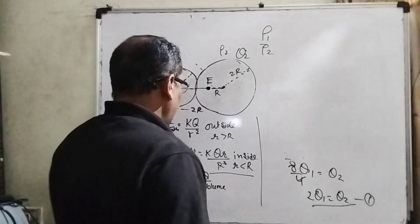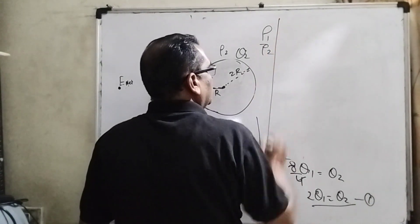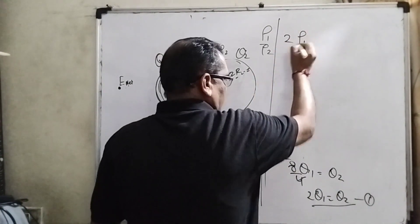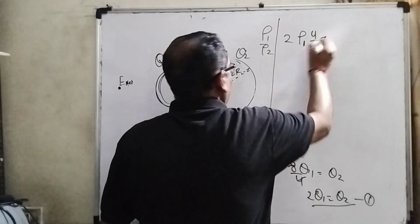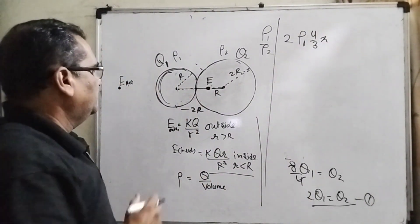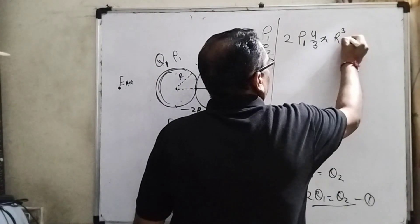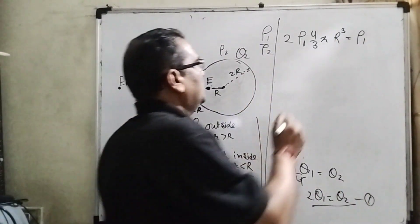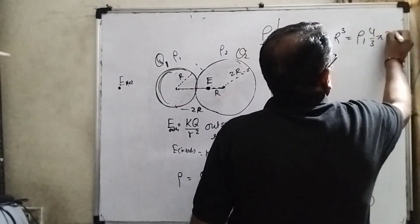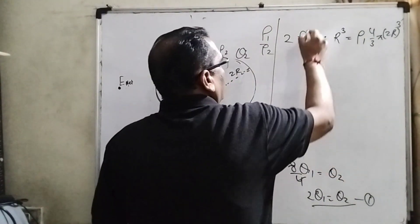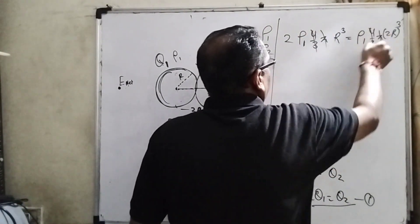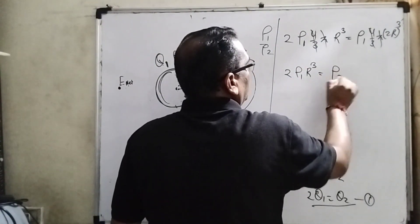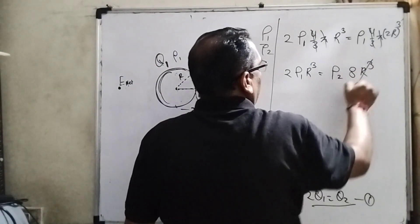So it is the first condition. Now charge can be written. Charge can be written as charge density rho 1 and volume 4 by 3 pi and the radius is r cubed. And rho 2 for q2, the radius should be taken 2r, 4 by 3 pi 2r cubed.